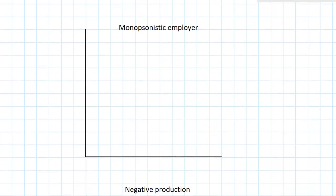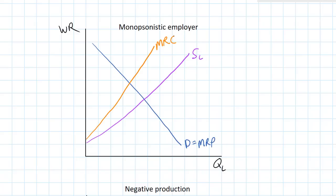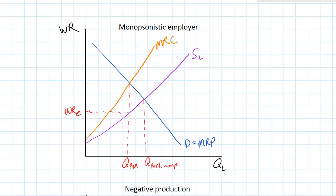A monopsony is a firm that is a wage maker — it has to raise wages to attract more workers, in contrast to a perfectly competitive employer. Because it must raise the wage rate to attract more workers, the marginal resource cost is always higher than the wage rate it pays. For this reason, the firm will employ fewer workers and pay a lower wage rate than would be paid and employed in a perfectly competitive labor market.